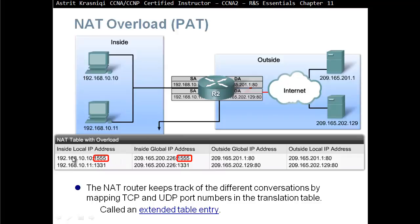PAT will try to keep the original port numbers the same, but it doesn't have to. This information is kept in the extended table entry. The destination port number remains the same — the router does not change the destination port. For example, if a PC is trying to reach port 80 (a web server) and the router translated it to 443, that would not be successful. So the only things translated are the source port number and the source IP address.